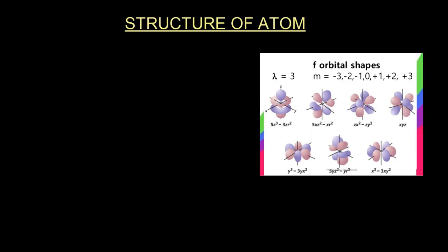And this is what the f orbital looks like. We know that the f orbital is represented by l equal to 3.